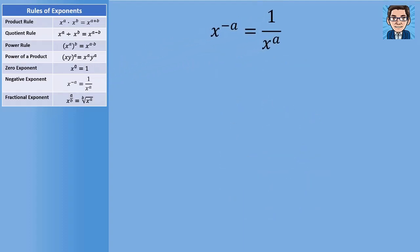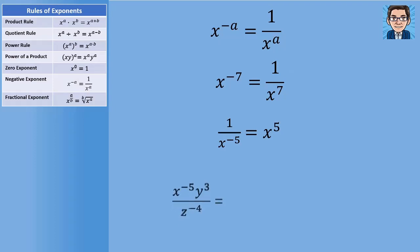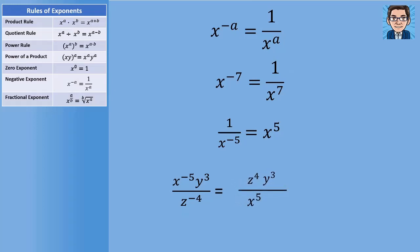The next rule addresses negative exponents. If something is to a negative exponent, it's the same as one over that same thing to a positive exponent. So x to the negative seventh is the same as one over x to the positive seventh. One over x to the negative fifth is the same as x to the positive fifth. This is really handy for simplifying expressions — we can move x to the negative fifth from the numerator to the denominator to make it positive five, and move z from the denominator to the numerator to change negative four to positive four.